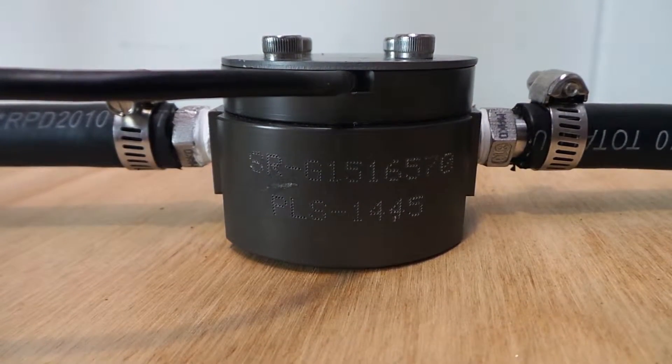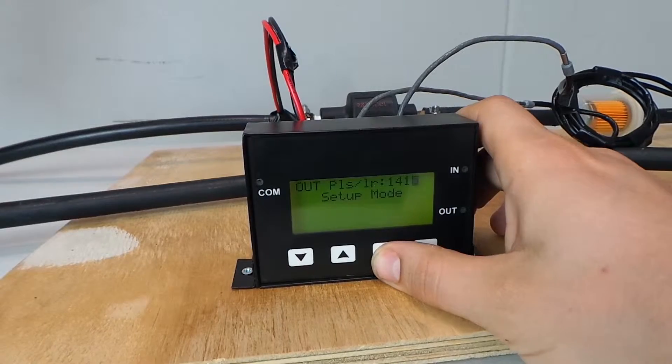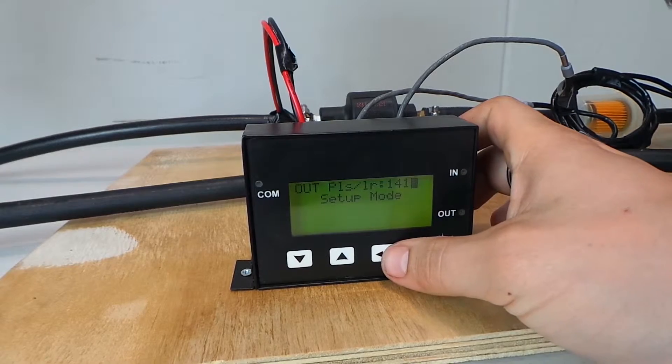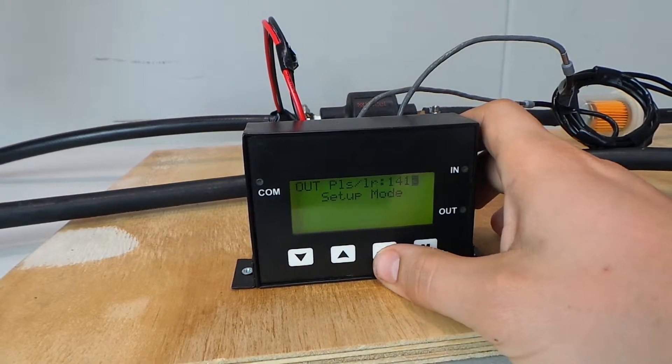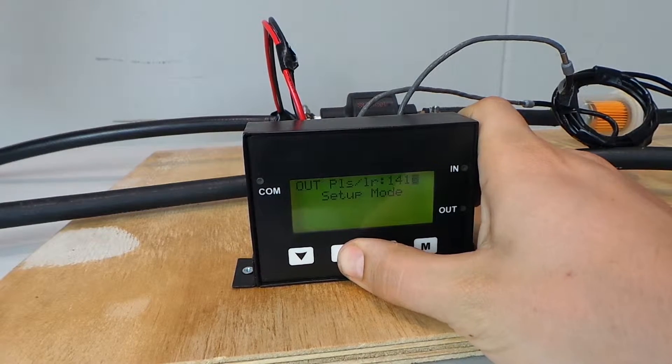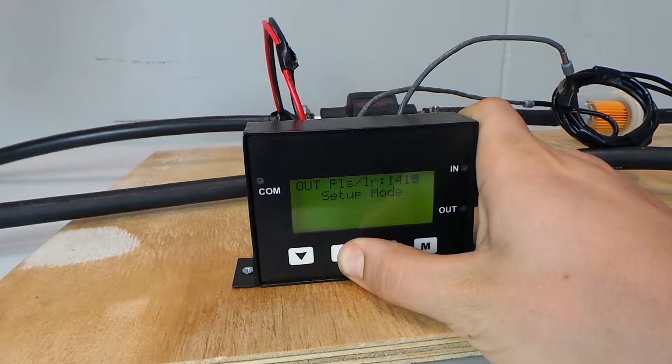If you are getting inaccurate readings, the first thing to check is that you have correctly entered the pulse settings from the side of the pulse meters. Also ensure that you have correctly placed the in in the in and the out in the out. Please see our setup video for full information on this.